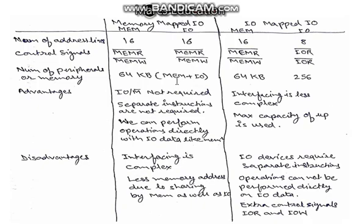Advantages of memory mapped I/O: I/O M bar is not required in memory mapped I/O because the I/O M bar signal differentiates between I/O and memory. But here the I/O and memory is treated as same, so I/O M bar signal is not required. Separate instructions are not required as IN 01, OUT 02, because there is no difference in memory and I/O.